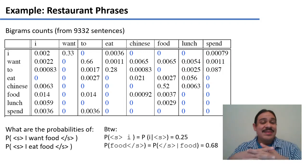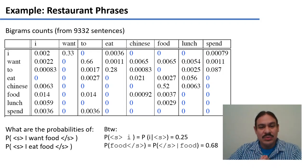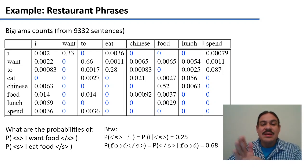So now, this is an exercise for you. I want you to try to calculate the probabilities for the sentence I want food and I eat food. And by the way, these are some additional probabilities that you'll need.